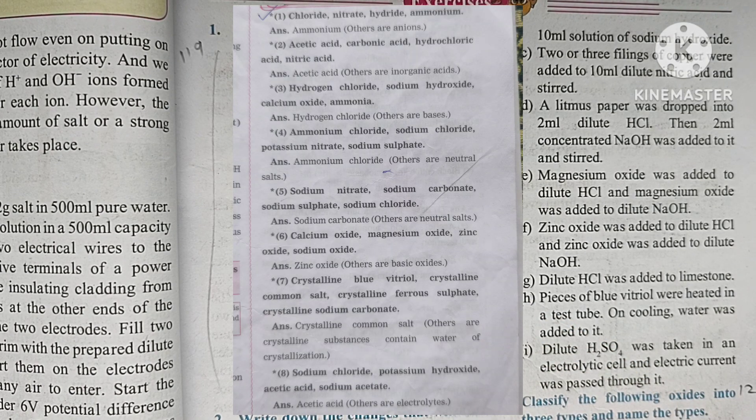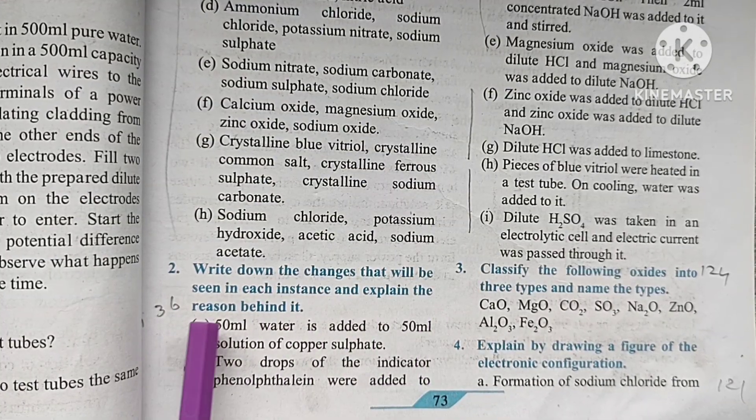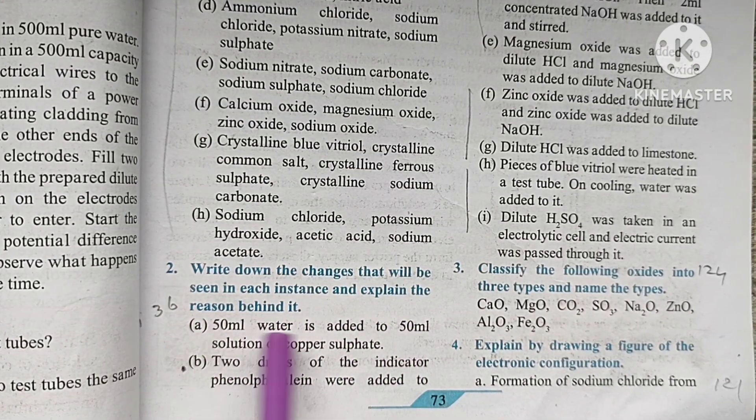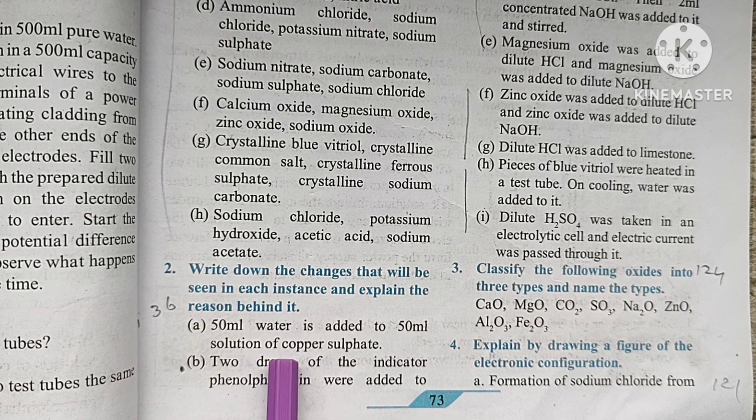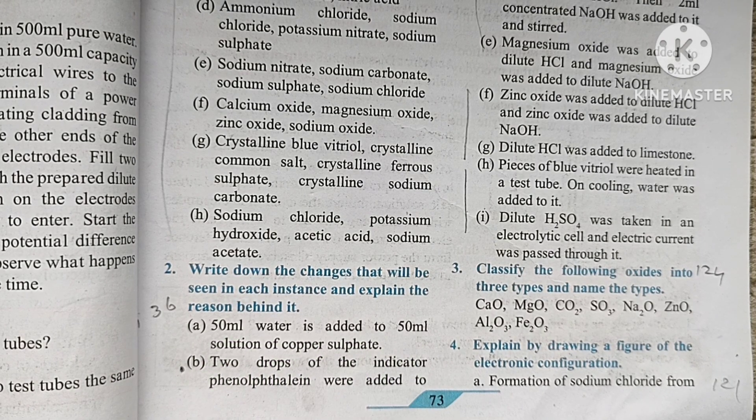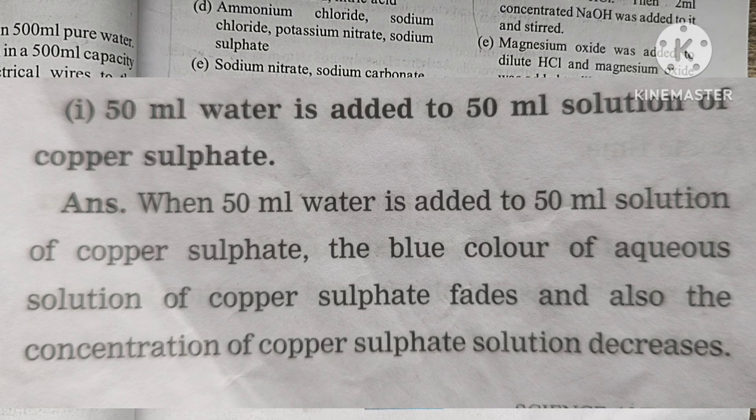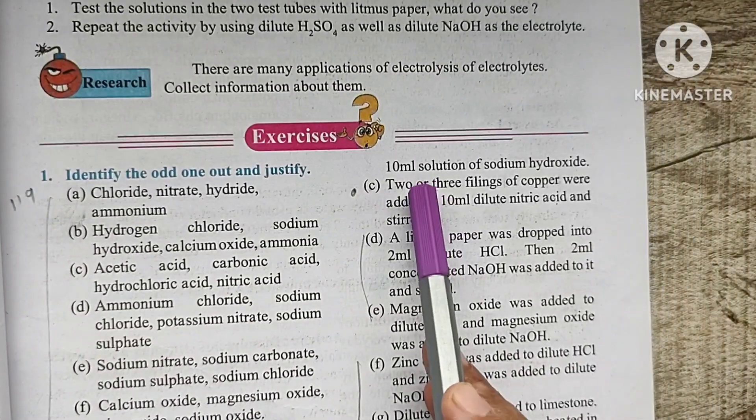Question 2: Write down the changes that will be seen in each incident and explain the reason behind it. Part A: 50 ml water is added to 50 ml solution of copper sulphate. Here we will write.